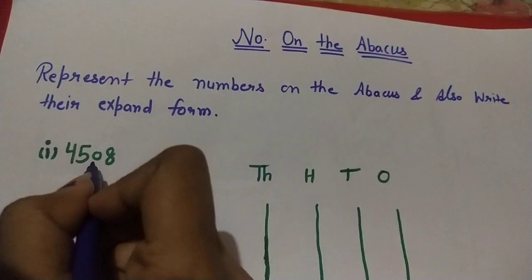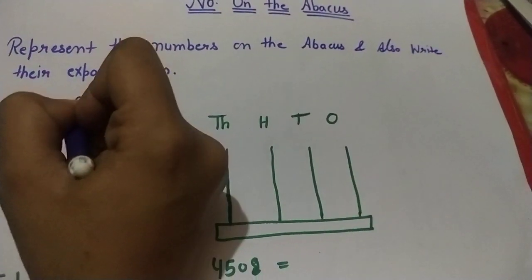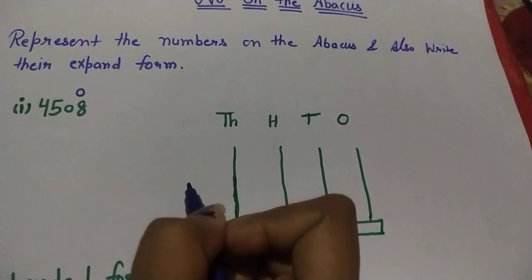So the number is 4508. So 8 in ones place, so ones place also how many digits is 8. So how many beads to draw? 8: 1, 2, 3, 4, 5, 6, 7, 8.